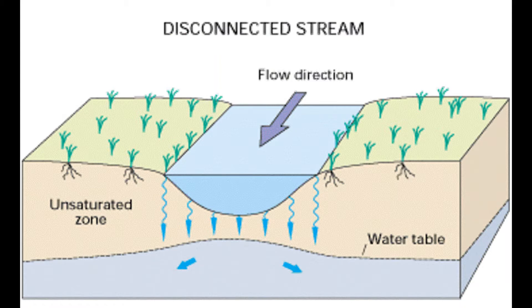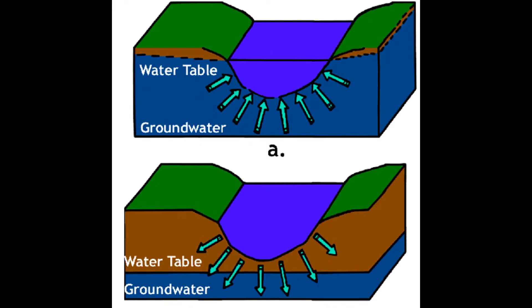Whether a stream is gaining or losing depends on the altitudes of the water table and stream water surface. When the altitude of the water table is higher than the stream surface, the stream will gain. When the altitude of the surface water is higher than the water table, then the stream will lose.